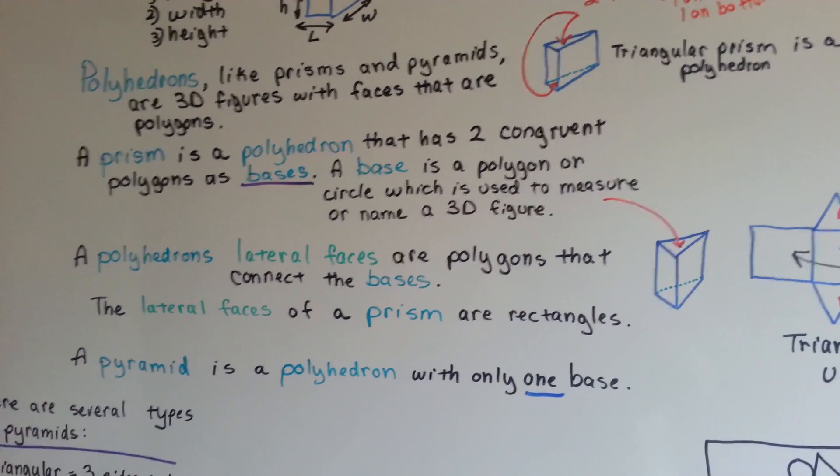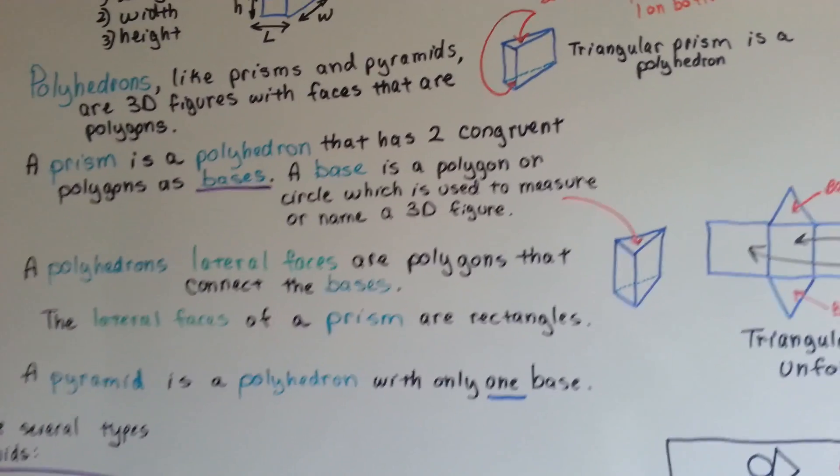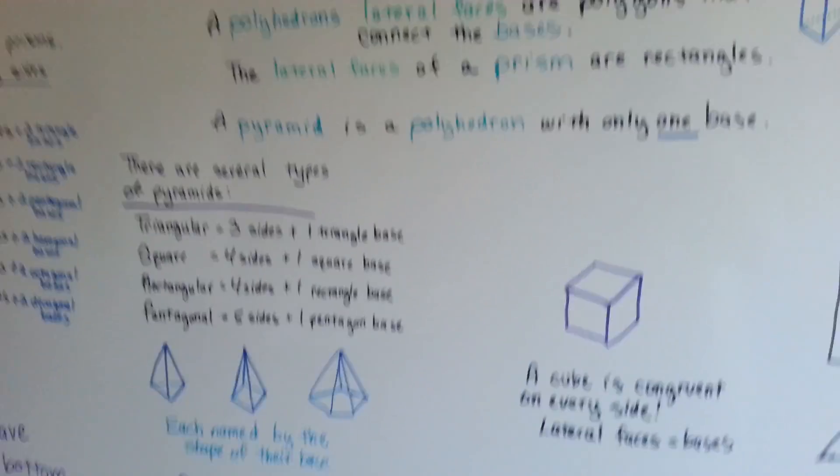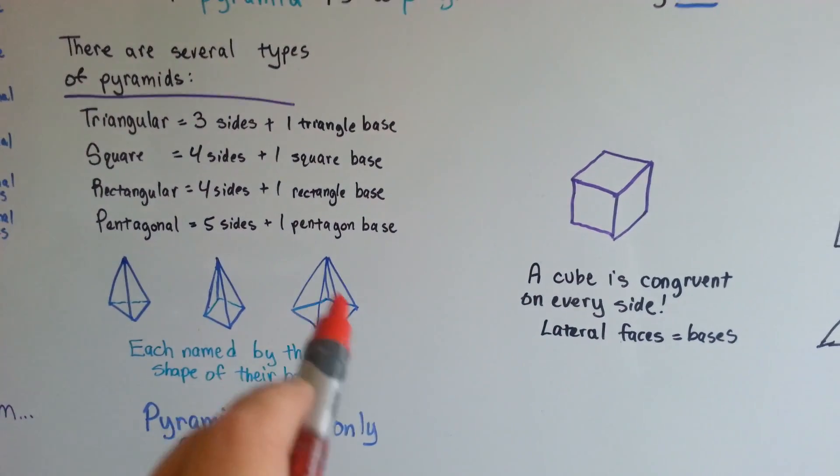So a pyramid is a polyhedron with only one base. They look like this. It's only got one base.